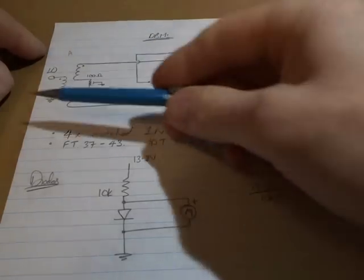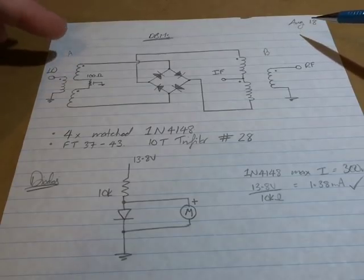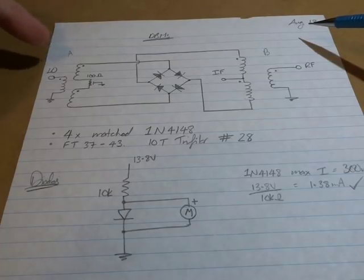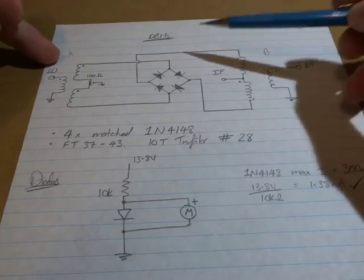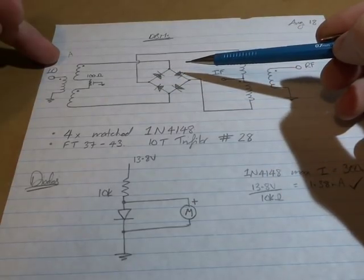This will be the configuration. We'll have two toroids, they'll be FT37-43s, one for here and one over here.